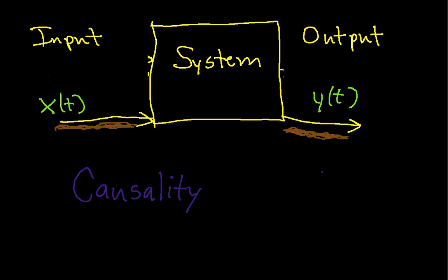Causality simply means that if the output of the system is Y of T and this is a time index, so if I'm looking at the output of a system at a particular point in time T, that that output depends on the input